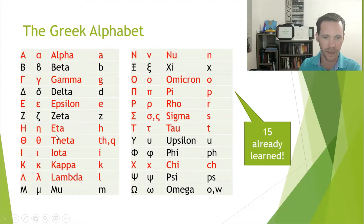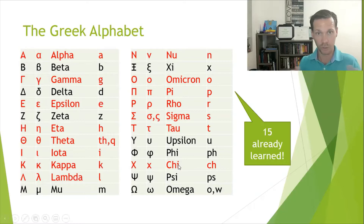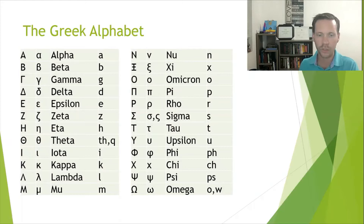What I want you to notice is that you have learned more than half of them already — you know 15 letters: alpha, gamma, epsilon, eta, theta, iota, kappa, lambda, nu, omicron, pi, rho, sigma, tau, and chi. You've already done half the battle. So what we want to do now is learn all the rest of the letters as we go through.